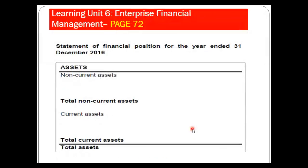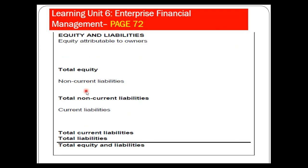The next statement is the Statement of Financial Position — formerly known as the balance sheet. We only record assets, owner's equity (funds), and liabilities. Assets are divided into two categories: non-current assets (long-term) and current assets (short-term). You add non-current and current assets together to get total assets. Always remember: under the Statement of Financial Position we have assets.